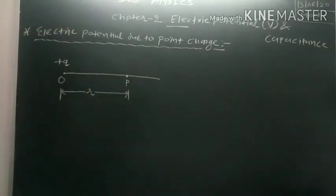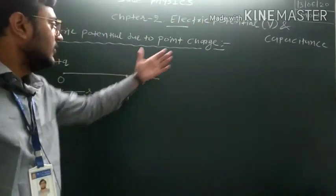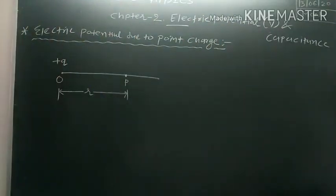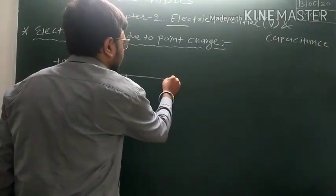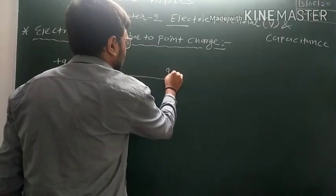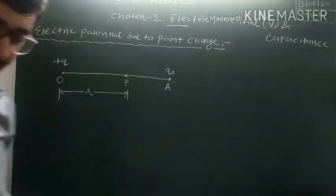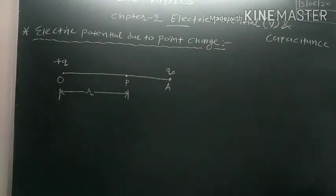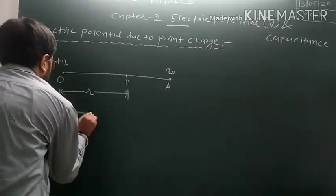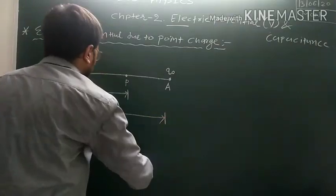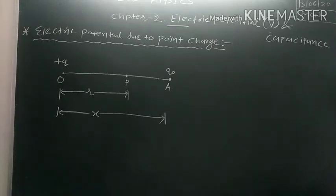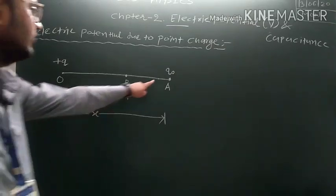The electric potential at point P will be equal to the amount of work done in bringing a unit positive charge from infinity to point P. Suppose we take the test charge Q₀ placed at some point A, at distance X from O. By Coulomb's law, the electrostatic force acts on charge Q₀.